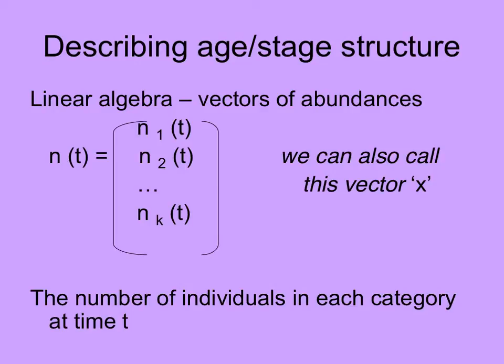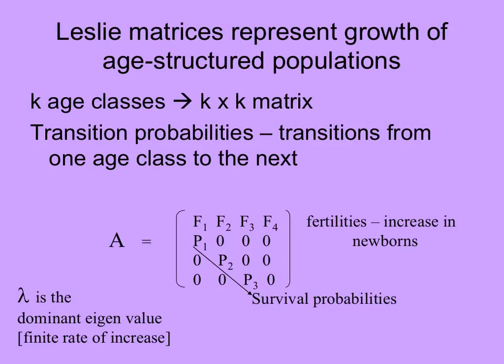To describe age or stage structure of populations, we can use linear algebra to express the proportions or numbers of individuals in different age or stage classes as vectors of abundance. N at time t — a population at a certain time — is equal to the numbers or proportions of individuals in each stage class from 1 to k. We can also call this vector x. For every population, we can make a matrix of transition probabilities. For each stage or age class, there's a probability of staying the same and a probability of moving up to the next class or down to the previous class. This is the Leslie matrix, or A.